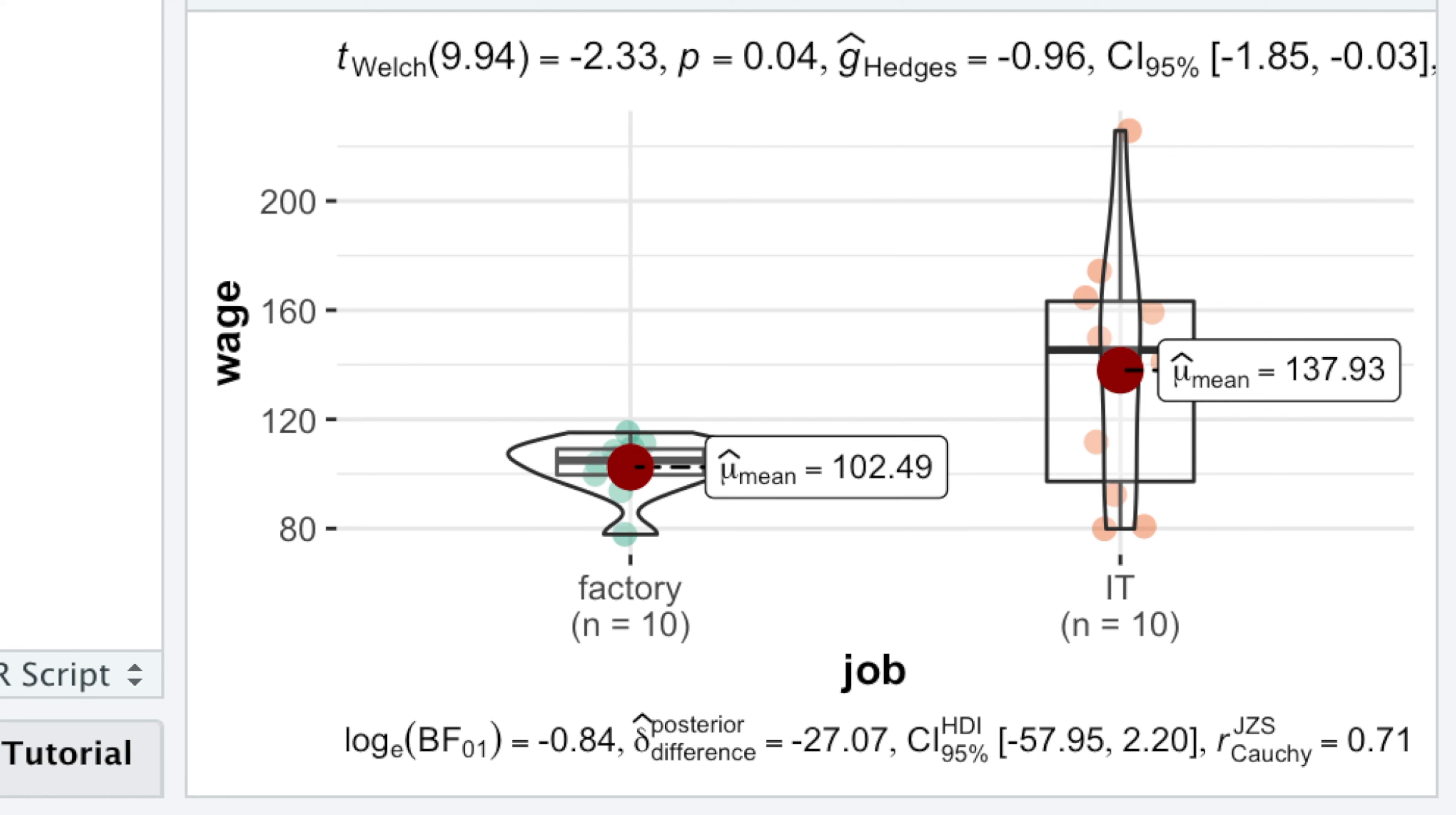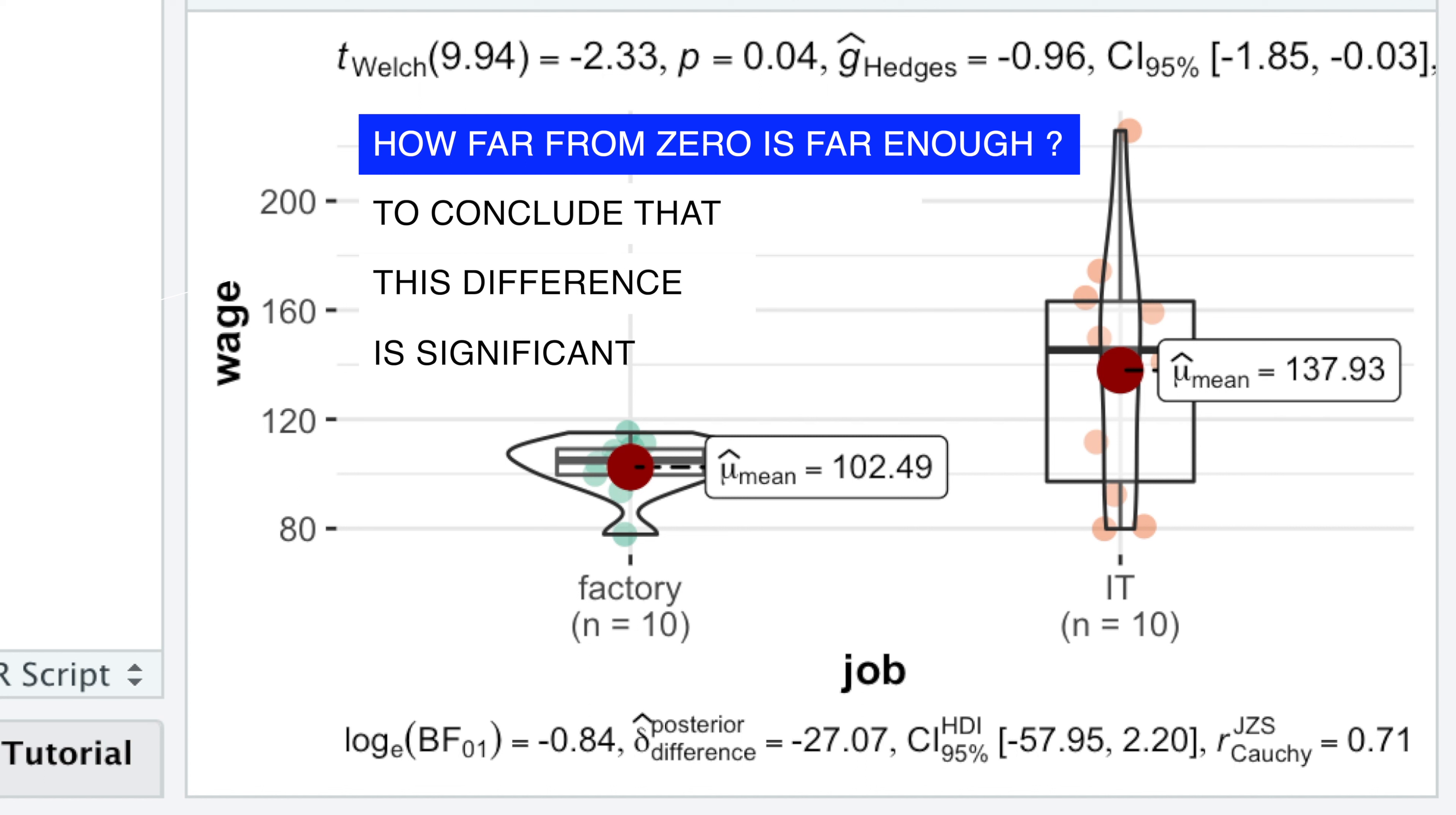Now, let's interpret the results. Welch t-statistic is the measure of similarity between compared samples, measured in units of standard error. The further t-value is from 0, the more different are the samples. But t-value by itself cannot say how far from 0 is far enough to conclude that this difference is significant.